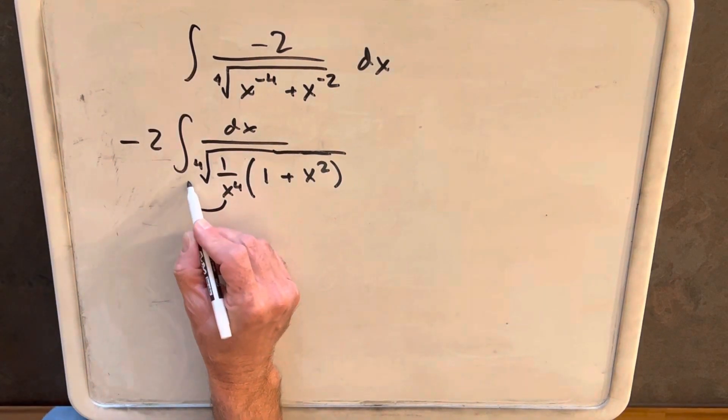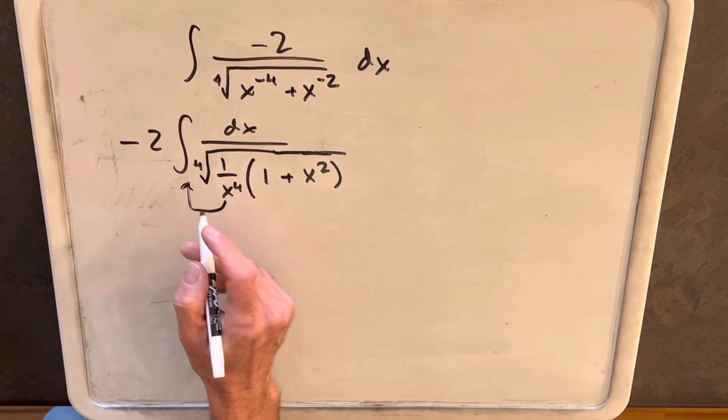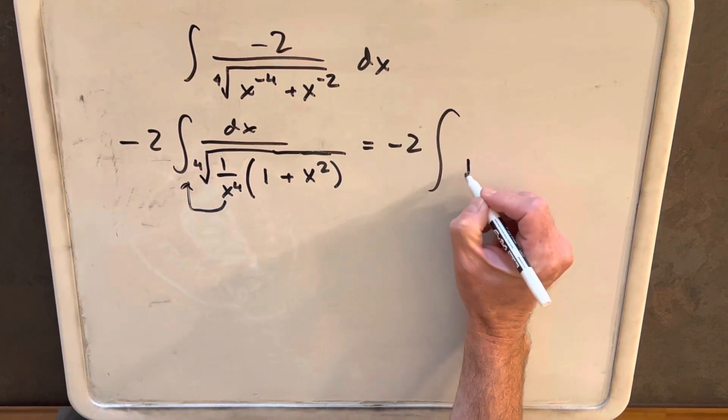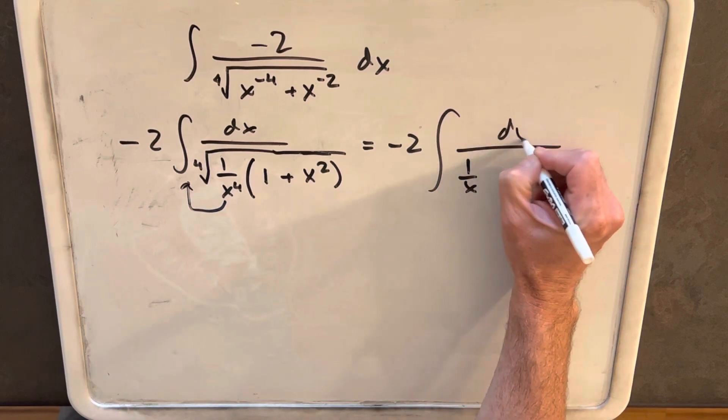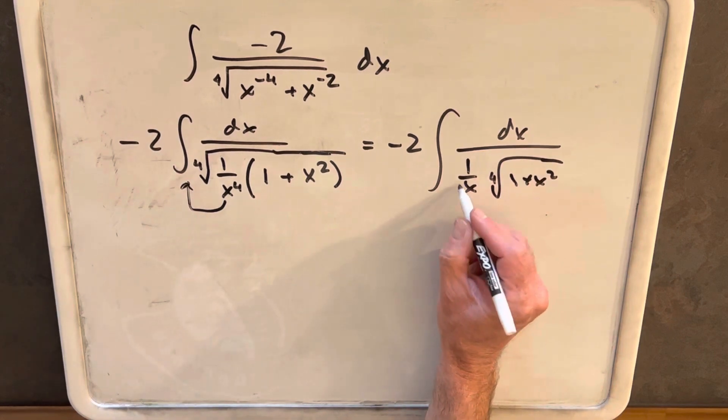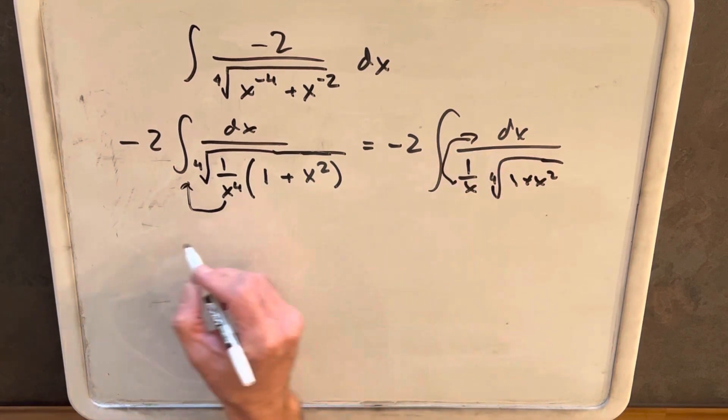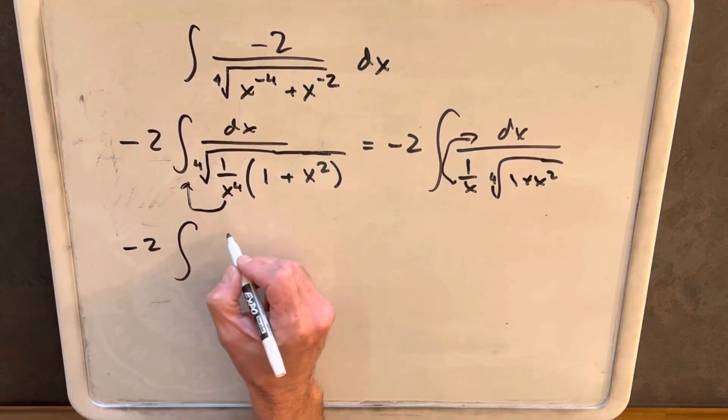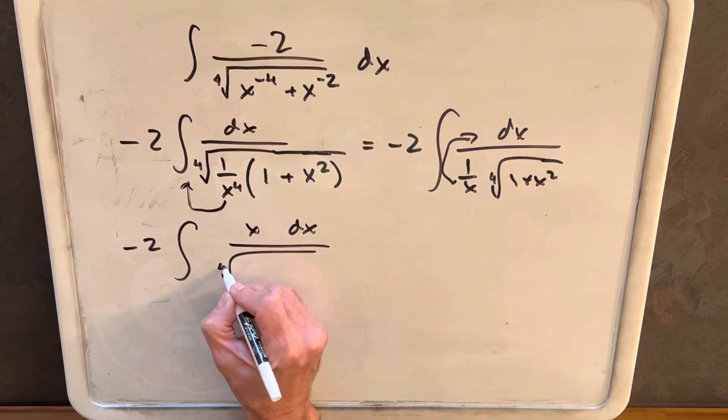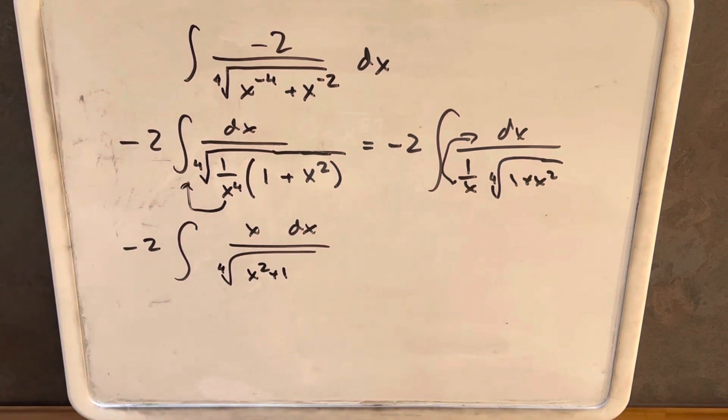Now let's get this outside of the radical, so it's going to be minus 2, 1 over x, fourth root of 1 plus x squared. But if we bring this to the numerator, that's just going to be an x. So we're going to have x dx over the fourth root of x squared plus 1, just changing the order.